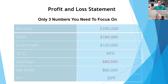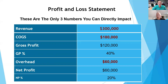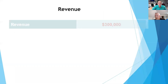The only three numbers you need to focus on are the three key numbers: revenue, cost of goods sold or variable costs, and overhead. Those are the three numbers that you can control, and those are the three numbers that you can have the biggest direct impact on.